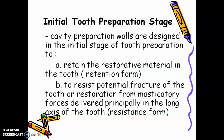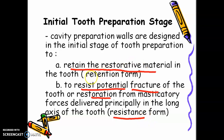In the initial tooth preparation stage, cavity preparation walls are designed to retain the restorative material in the tooth — so that the amalgam, composite resin, or GI is not dislodged. To resist potential fracture of the tooth or the restoration from masticatory forces while the patient is chewing, the tooth and the restoration should not fracture. That form we create in the cavity is resistance form. To retain the restorative material, that is retention form. Resistance form prevents fracture of the tooth or the restoration.